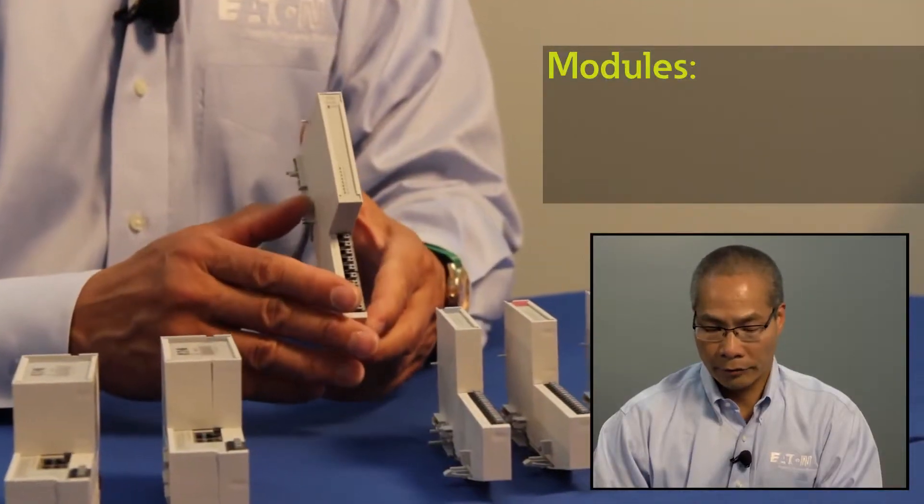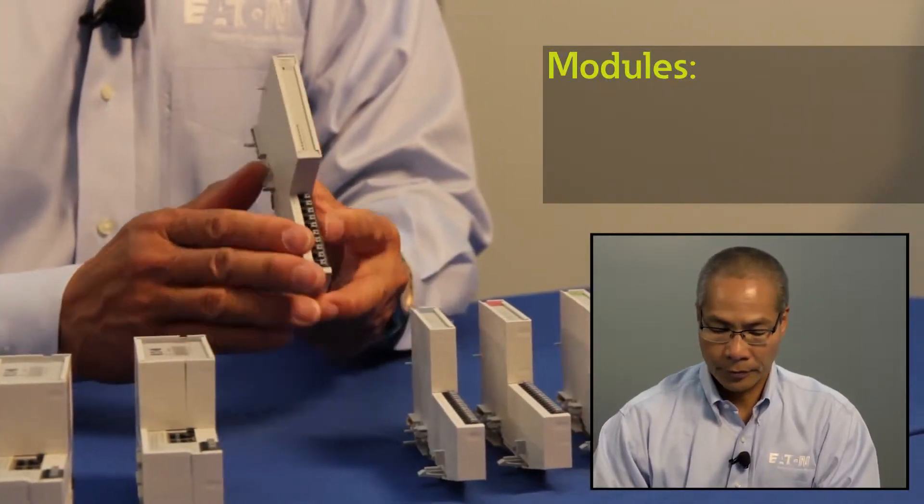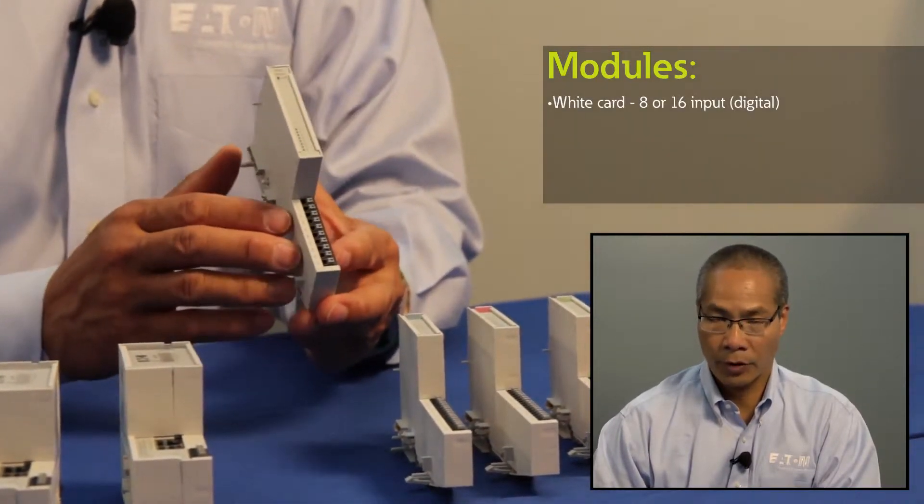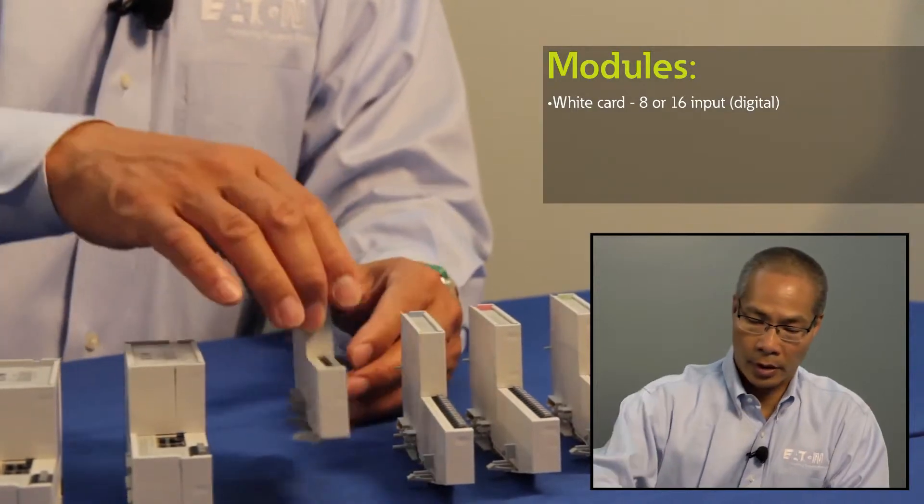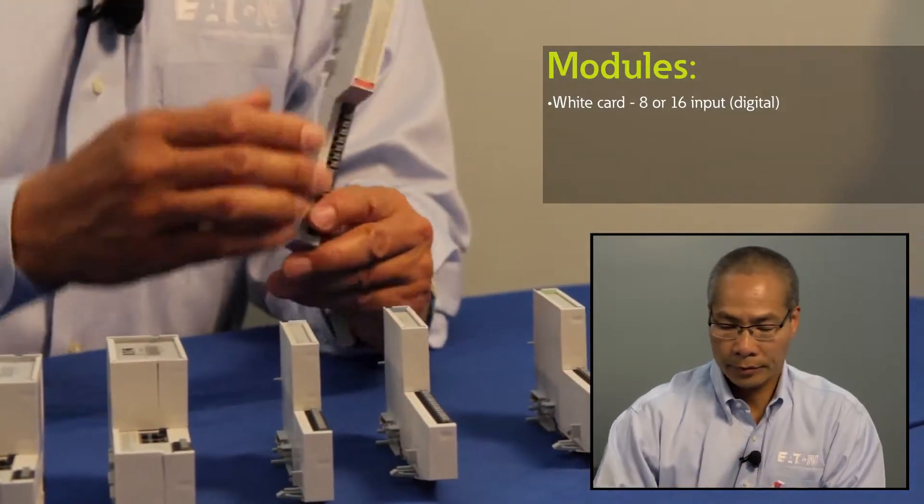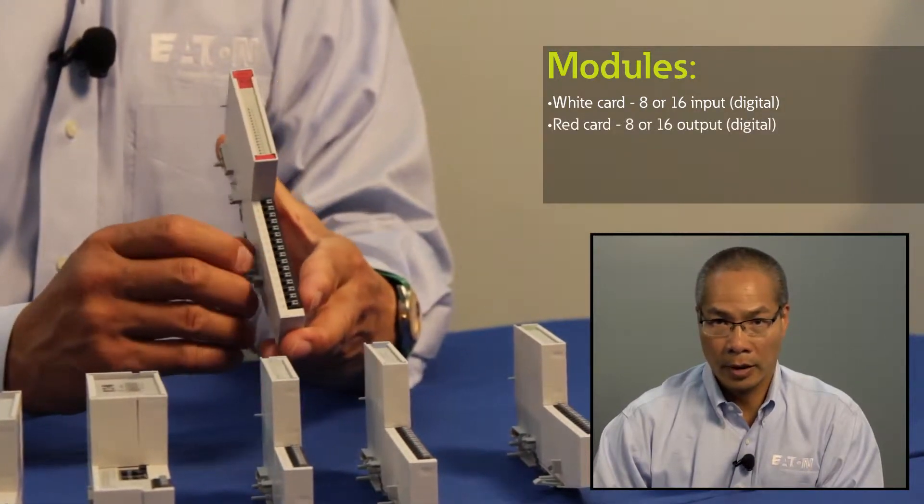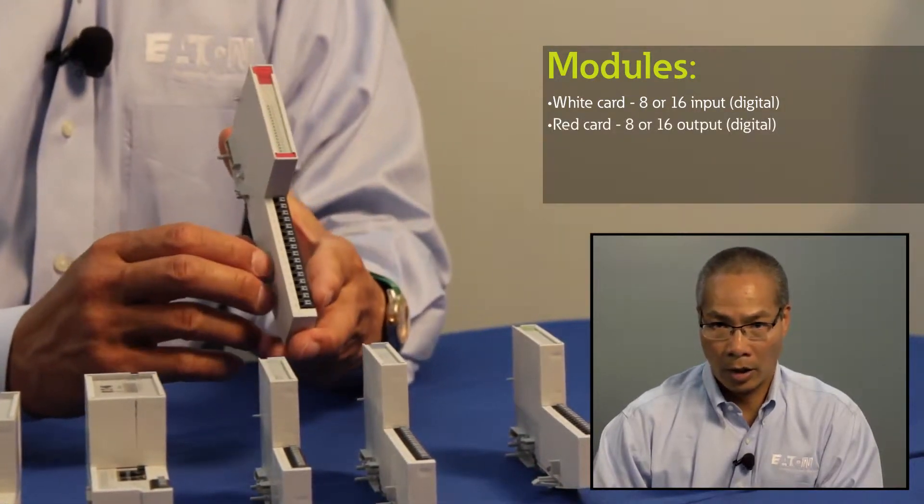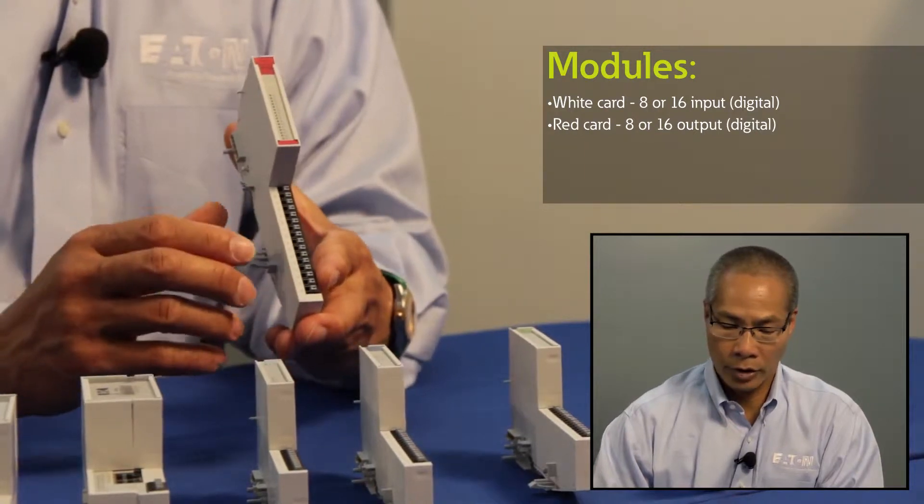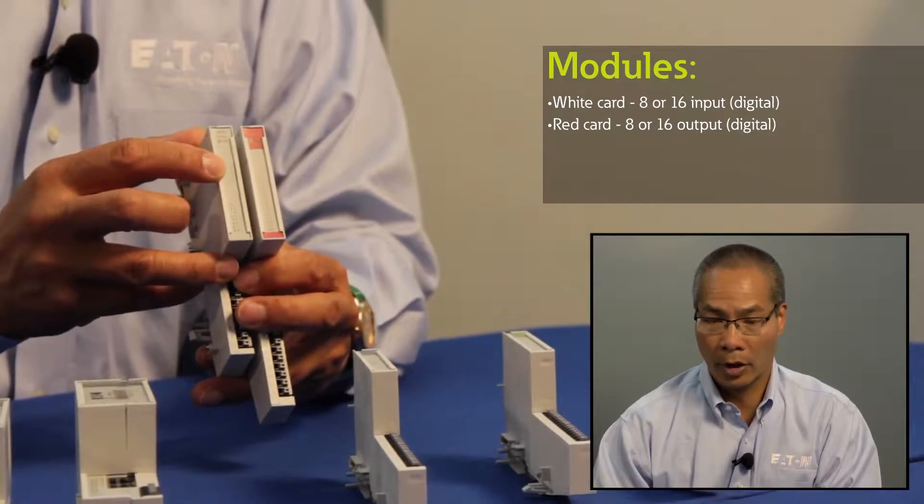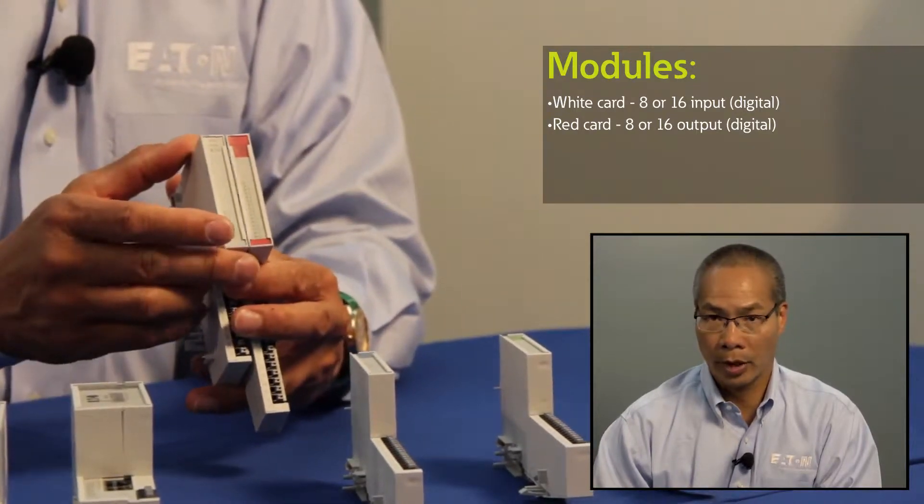The modules that are available are 8 input and 16 input slices for digital inputs, and 8 or 16 channel output cards. You'll notice that the labels are color-coded. Here I have an input card and the red one is an output card.